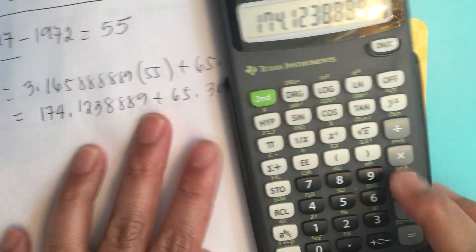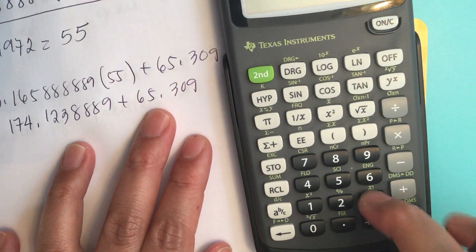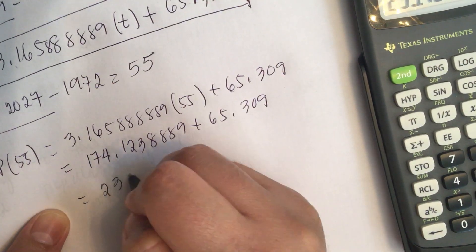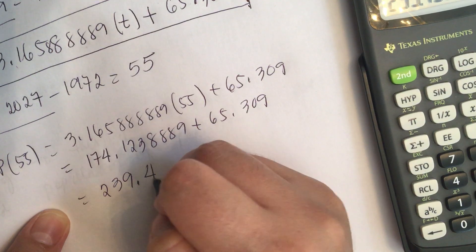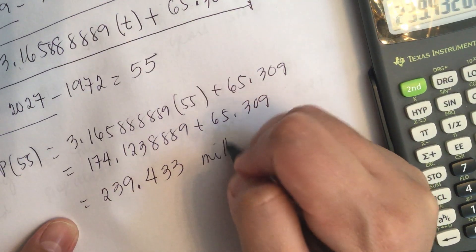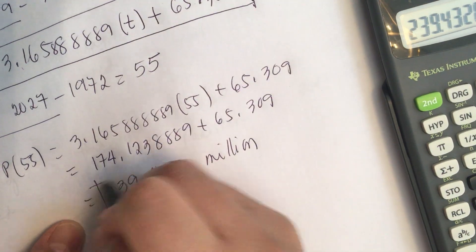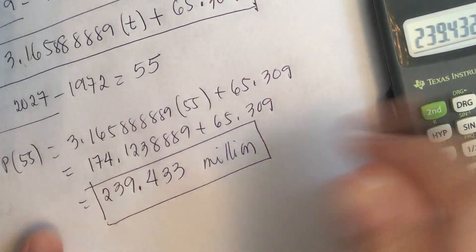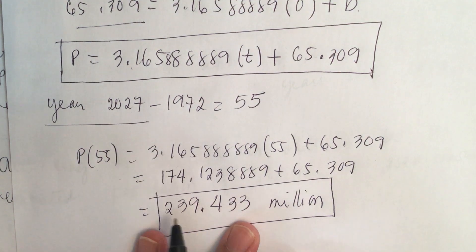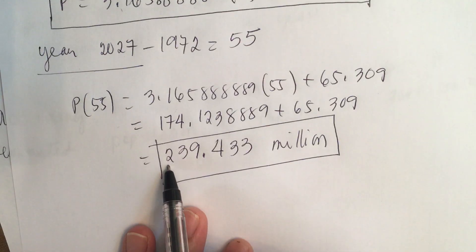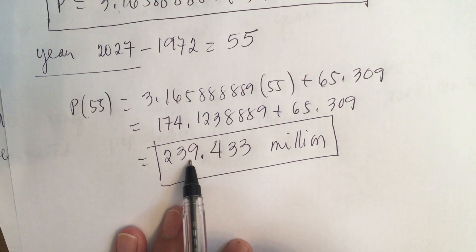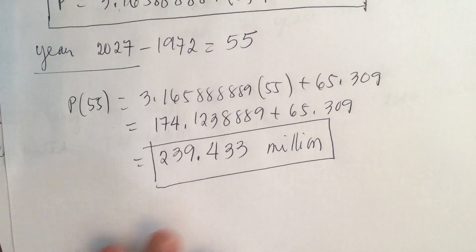We add 65.309 and it's equal to 239.433 million. In year 2027, the population of Pakistan will be 239.433 million.